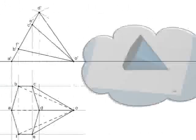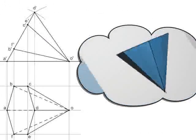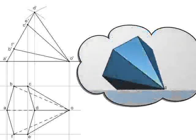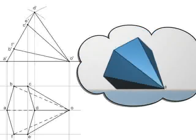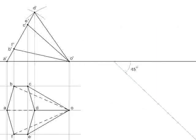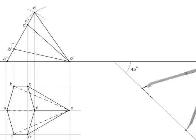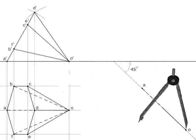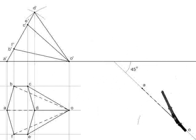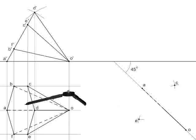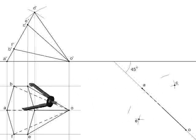Now consider the rotation of the plan by 45 degrees, where the observer is nearer to the apex. For this, draw line AO making an angle of 45 degrees to line XY. Transfer the distances of all points from the previous plan onto the new plan for the rest of the edges of the pyramid.